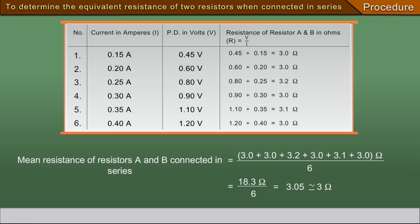Conclusion: The mean resistance of resistors A and B is equal to the sum total of the individual resistances of the resistors A and B.